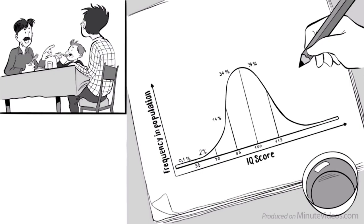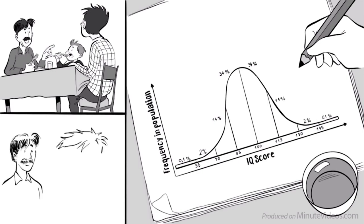Another 34 have an IQ between 100 and 115, and 14% between 115 to 130. Only 2% have an IQ higher than 130. And only 0.1% will have an IQ of a genius of 145 or above, like your little brother.